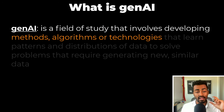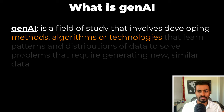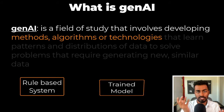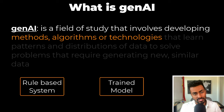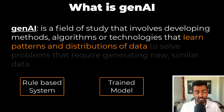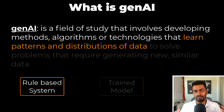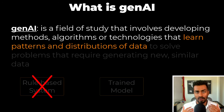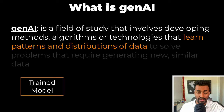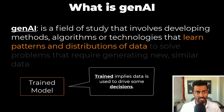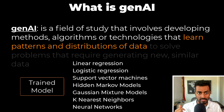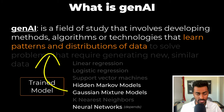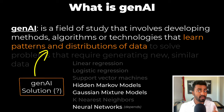Gen AI is a field of study that involves developing methods, algorithms, or technologies — which could be either a rule-based system or a trained model. For rule-based systems, they use a set of rules to solve problems with no data used to dynamically determine those rules, so rule-based systems are not Gen AI. Trained models, on the other hand, imply that data is used to drive decisions. But only a subset of trained models have the ability to learn the distribution of data, and whether they are truly Gen AI solutions also depends on the problem being solved.